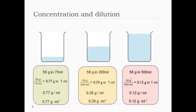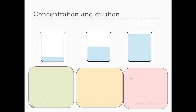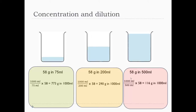There are different ways of writing this concentration per millilitre — 0.77 grams per millilitre, or 0.77 g mL⁻¹. It's exactly the same thing, just different ways of writing a concentration.